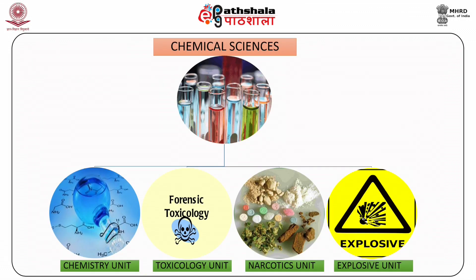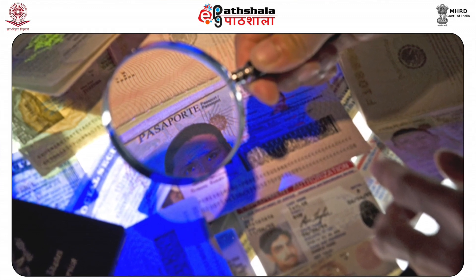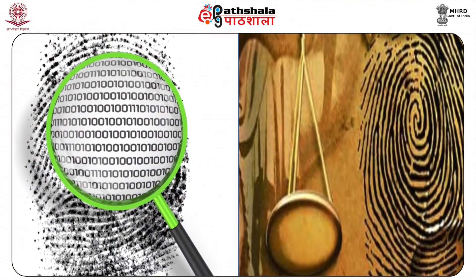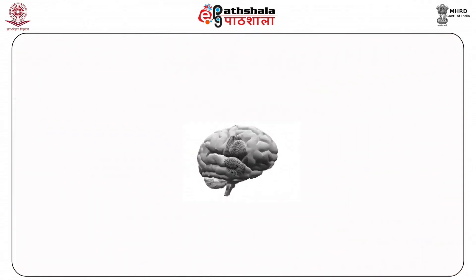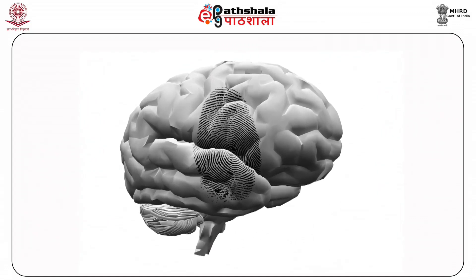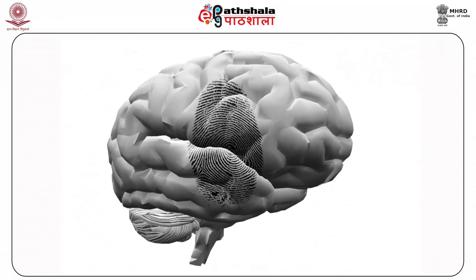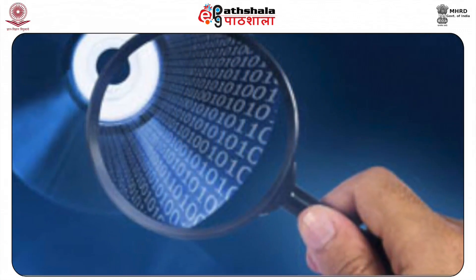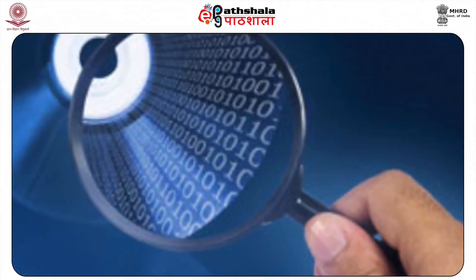Number five: chemical sciences, which include the chemistry unit, toxicology unit, narcotics unit, and explosive unit. Number six: document division. Number seven: fingerprint division. Number eight: psychological division, which includes lie detection, brain fingerprinting, and narco analysis. Number nine: voice identification. Number ten: computer forensic and cyber crime division. Number eleven: field units or mobile labs.